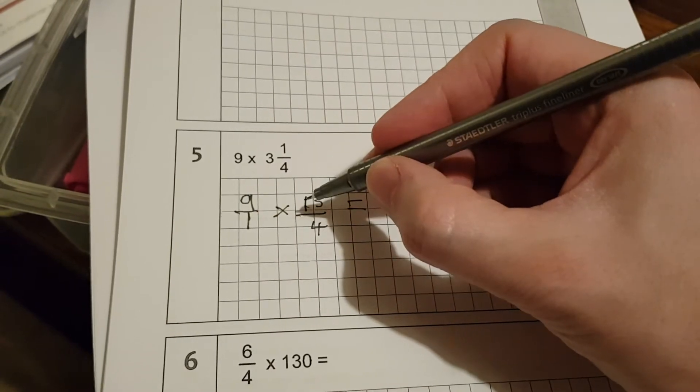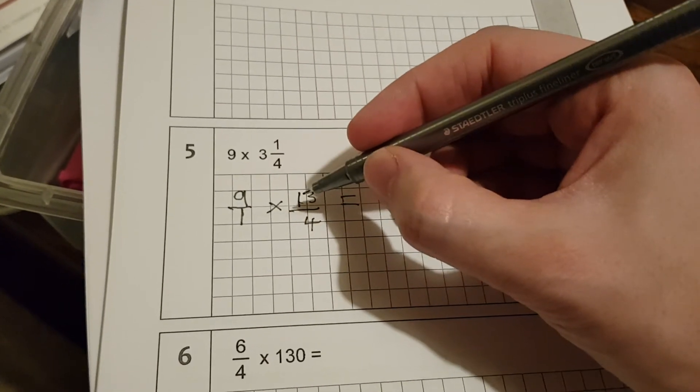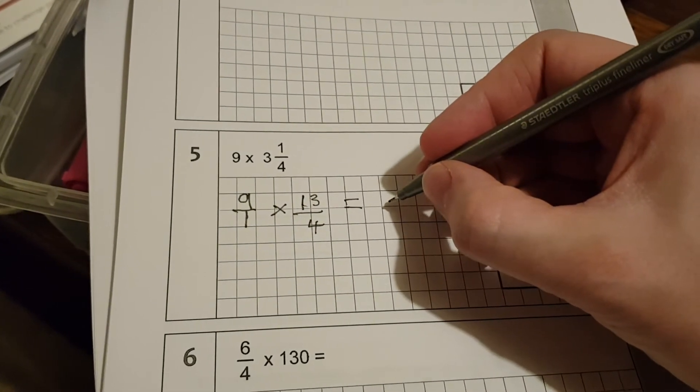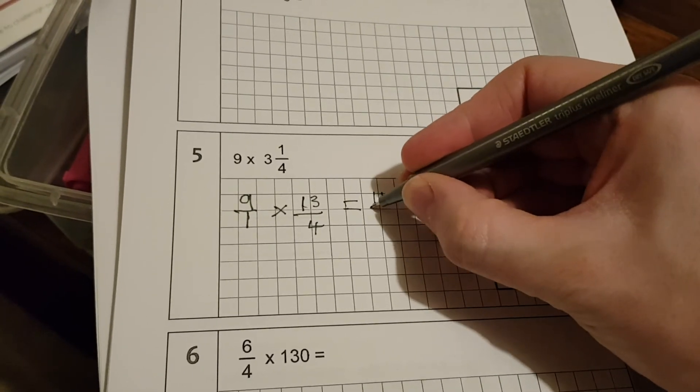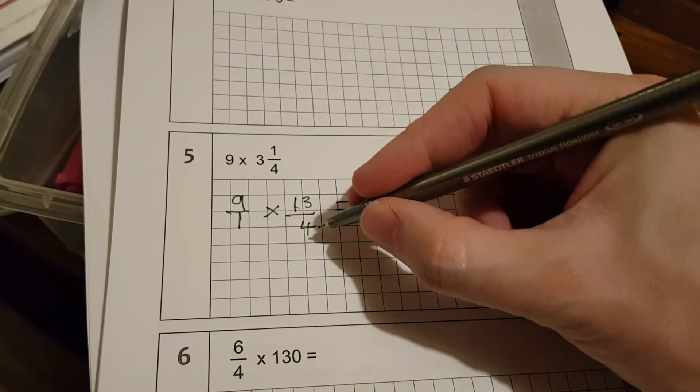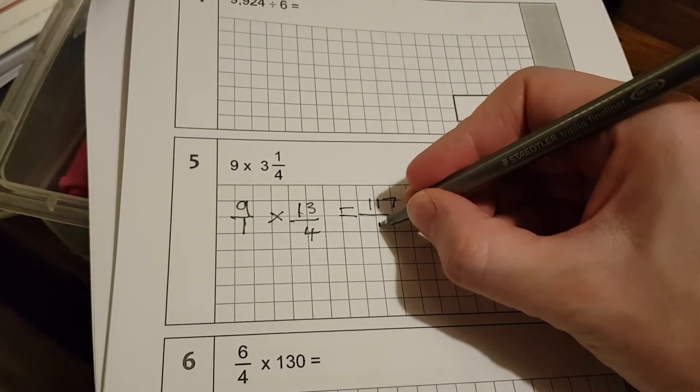So 9 times 13 is 117, and 1 times 4 is 4.